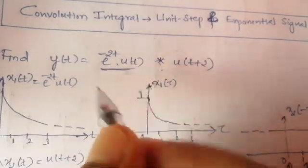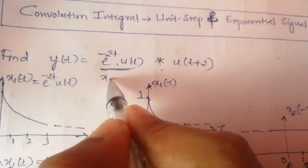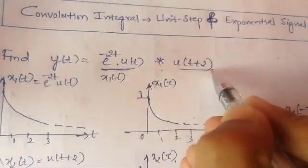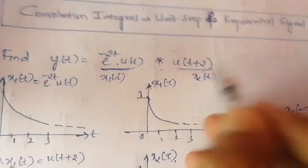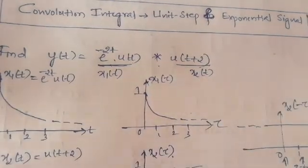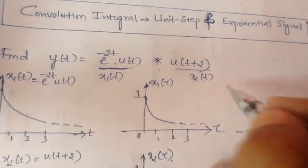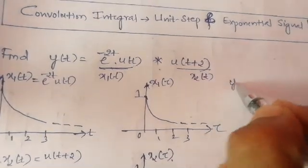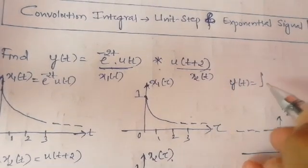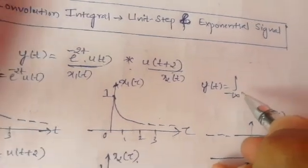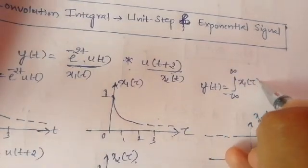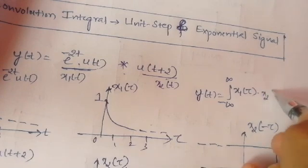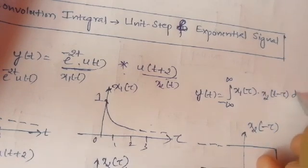We will consider this as the first signal x1 of t, and this one we will consider as x2 of t. This is the exponential signal; this is the unit step signal. Perform the operation between these two signals. We know the convolutional integral formula: y of t equal to integration over the limits minus infinity to plus infinity of x1 of tau into x2 of t minus tau, d tau.